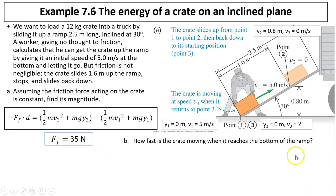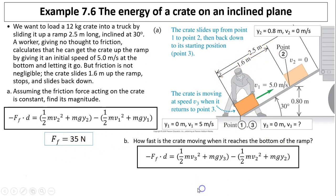Question 2: how fast is the crate moving when it reaches the bottom of the ramp? Now finding from position 2 to position 3, using the same friction force of 35 newtons and the same distance D equals 1.6 meters. Substituting the parameters for position 2 and position 3, solving for V3 gives 2.5 meters per second.